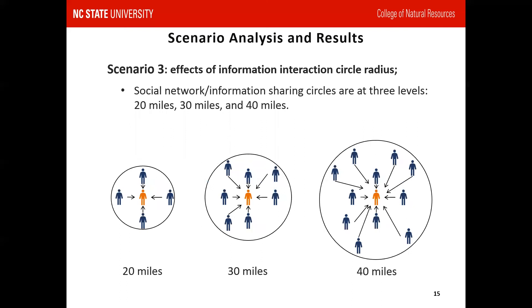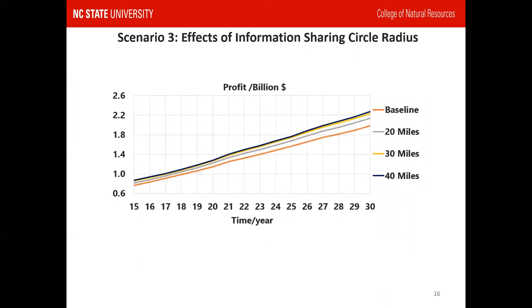Scenario three was conducted to investigate the impacts of information sharing. Each year, familiarity will be determined by other agents inside the information sharing circle. The radius can influence the final result. In this scenario, we compare different circle radii: 20, 30, and 40 miles, based on a 10-mile baseline. The results show significant difference in profit while other result categories are relatively small. With a larger information sharing circle, the accumulated profit of the system goes up. In other words, expanding the information sharing circle will help prevent profit loss.